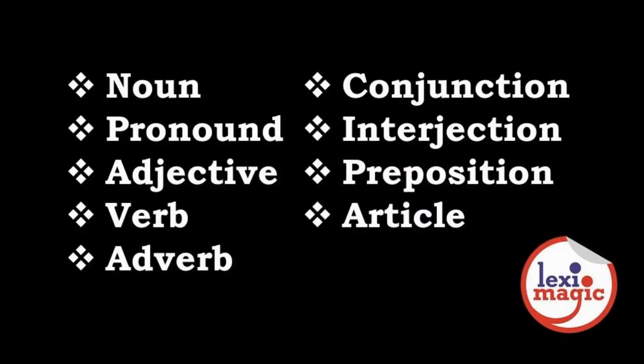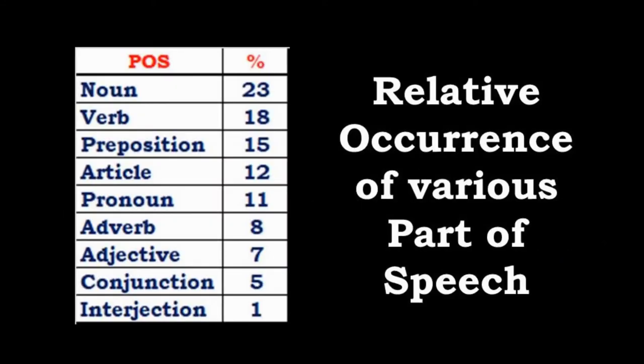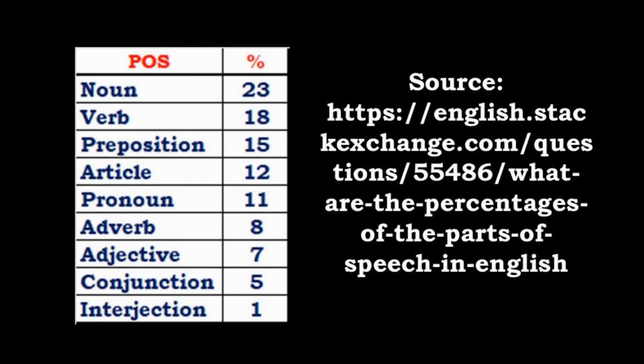Next, we will look at the approximate frequency of occurrences of these parts of speech in the English language. Not surprisingly, nouns make up 23% of the words, followed by 18% verbs, 15% prepositions, 12% articles, and 11% pronouns. Adverbs make up around 8%, adjectives about 7%, and conjunctions about 5%. Interjections make up less than 1% of English language text.